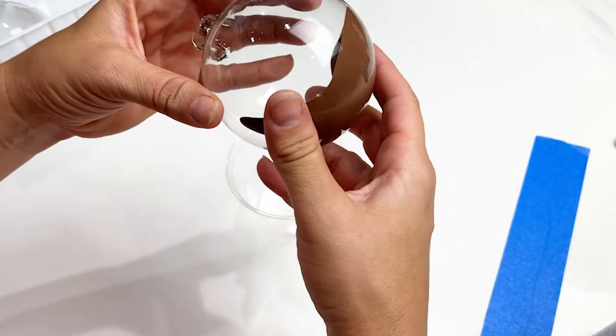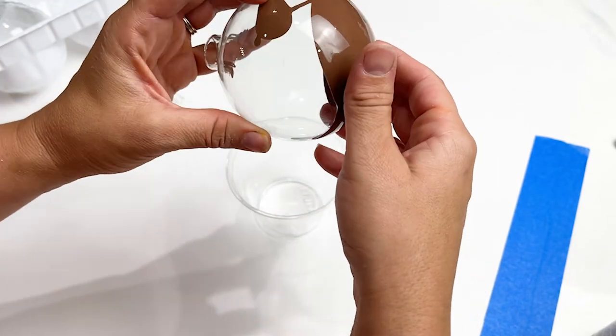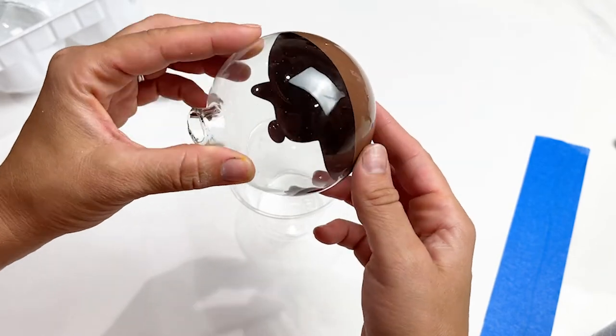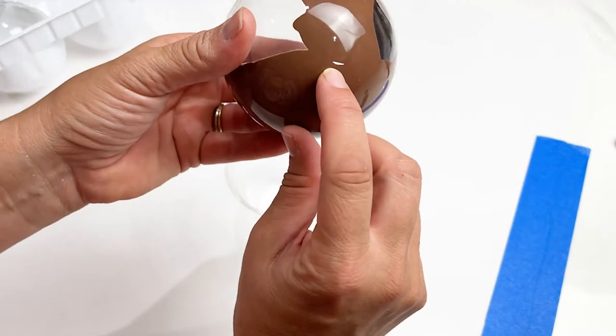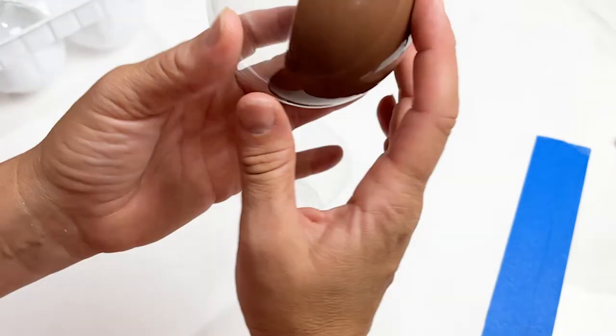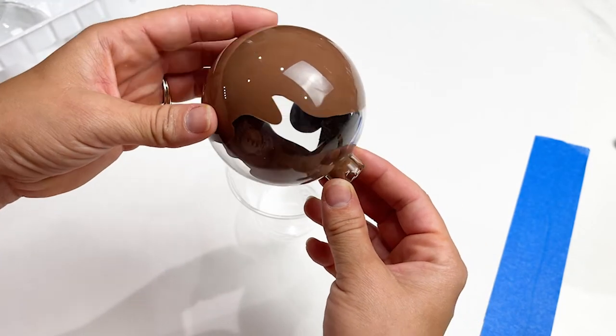Roll it in all different directions until the entire ornament is covered in that brown acrylic paint. This can be really fun for the kids. My kids personally were having a ball just rolling their ornaments around trying to get it all covered. You just want to make sure if you're doing this with small children that they do not put it upside down while they're turning it so that the paint drips out.